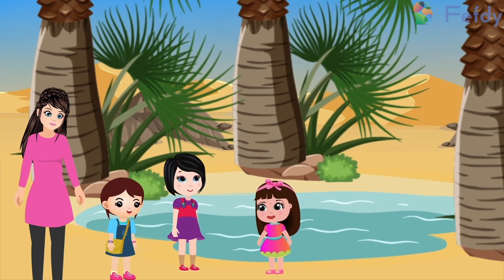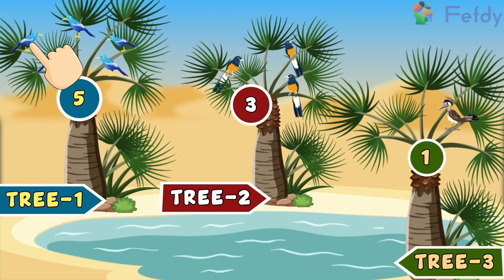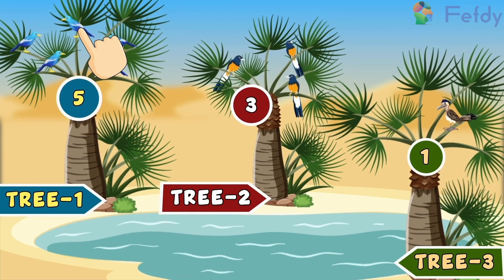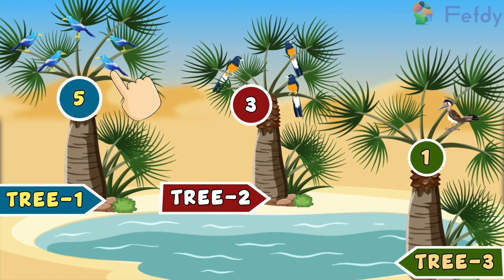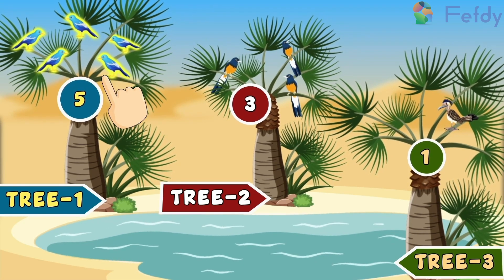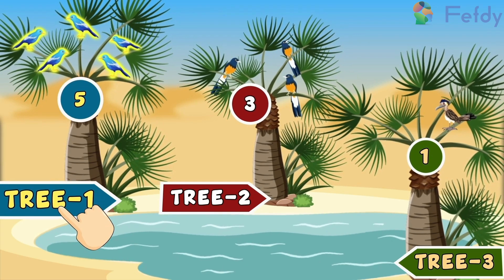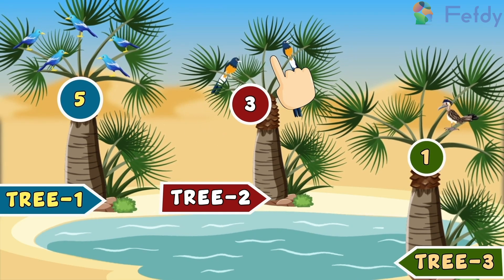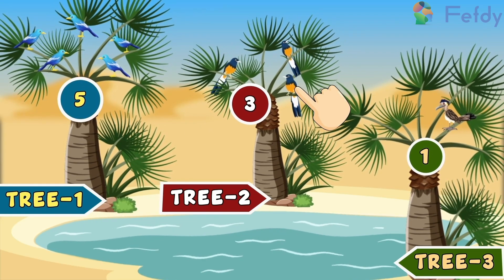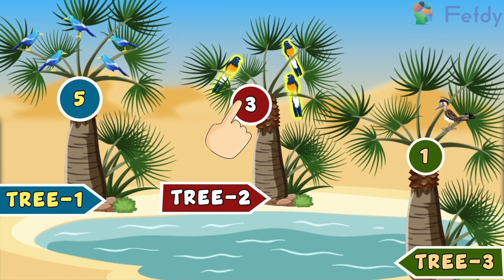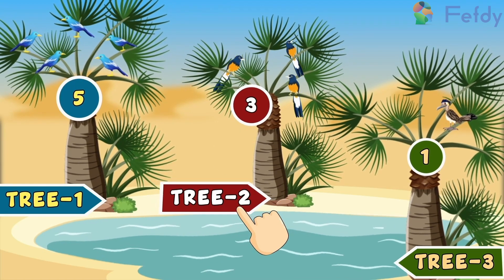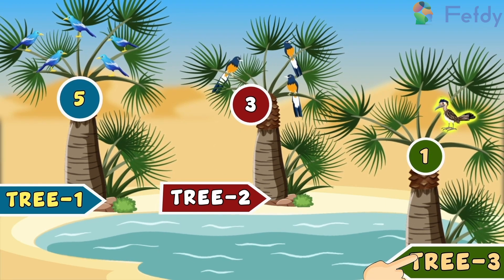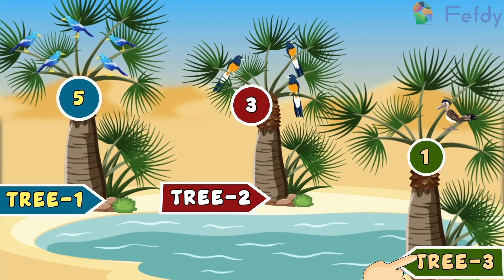Aunty, I will tell you. One, two, three, four and five. We all spotted five indigo buntings on tree one. One, two and three — three sheer tiles on tree two. And one roadrunner on tree three. Is that right, Aunty?